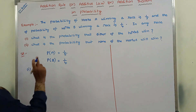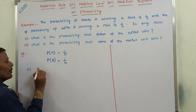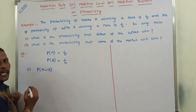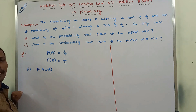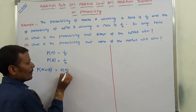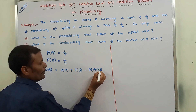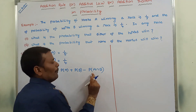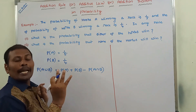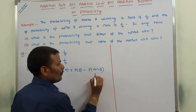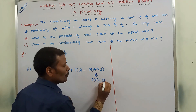For the first problem — what is the probability that either of the horses wins the race? — that is denoted by P(A ∪ B), meaning the probability that either horse A or horse B wins. Using the addition theorem: P(A ∪ B) = P(A) + P(B) − P(A ∩ B). Here, since horse A and horse B participate independently, P(A ∩ B) = P(A) × P(B).